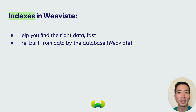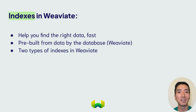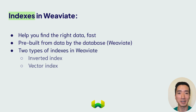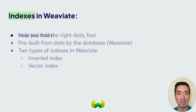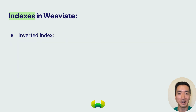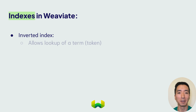In Weaviate, there are two main types of indexes: the inverted index and the vector index. You might be familiar with the inverted index — it's structured like a reference table that allows you to quickly look up a term and find objects containing that term.